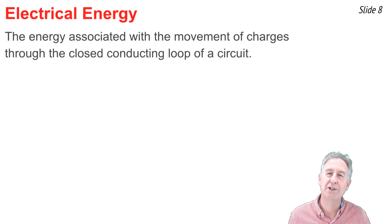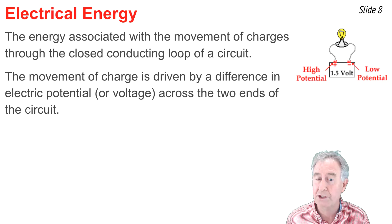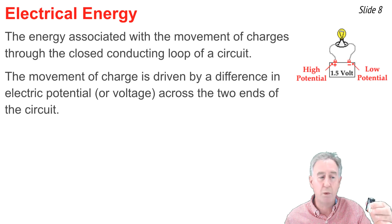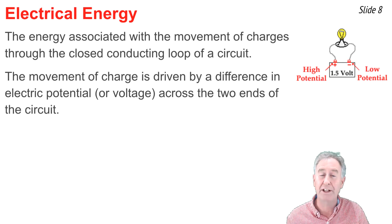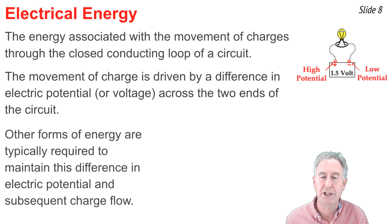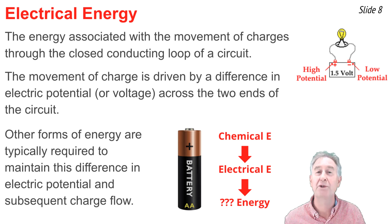Electrical energy is the energy associated with the movement of charge through the closed conducting loop of a circuit. This movement is made possible by an electric potential difference, or voltage difference, across the two ends of the circuit — often supplied by a dry cell, such as a 1.5-volt dry cell. If a light bulb is connected to the dry cell, a 1.5-volt difference is established across the bulb. In a dry cell, chemical energy is converted to electrical energy, and then to a useful form such as light energy.